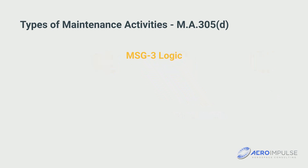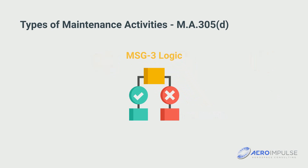MSG-3 is a standardized decision tree methodology from which the type of maintenance action is derived. This approach is preventive and, in addition to safety aspects, is also oriented towards flight operations and economic necessities.